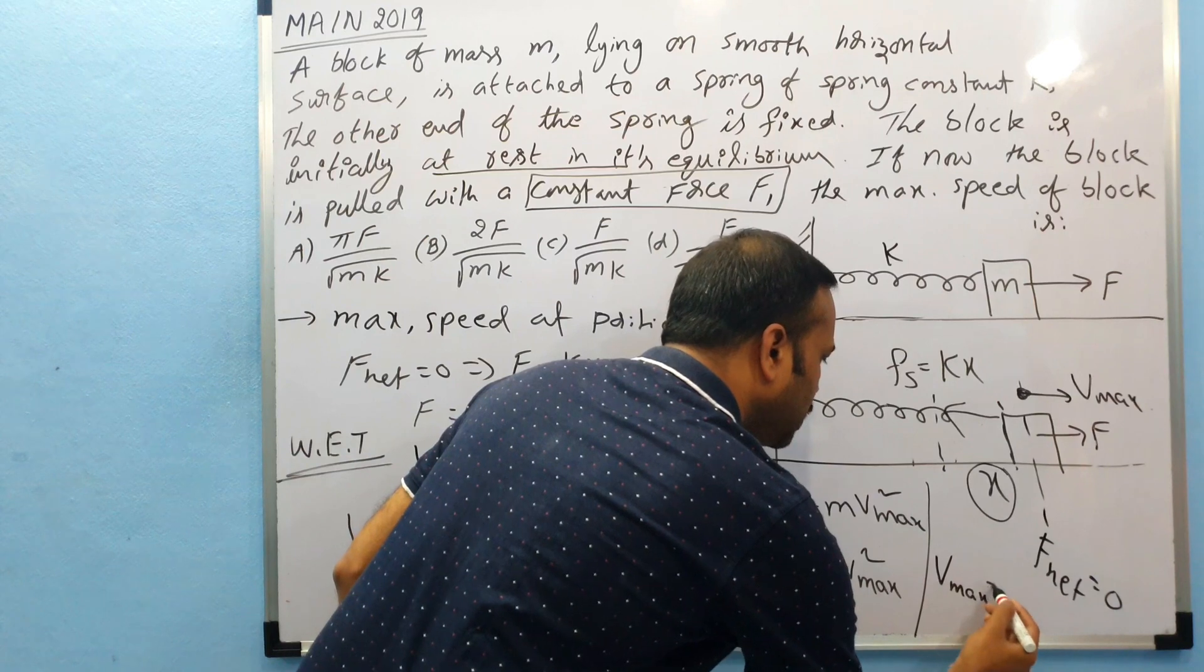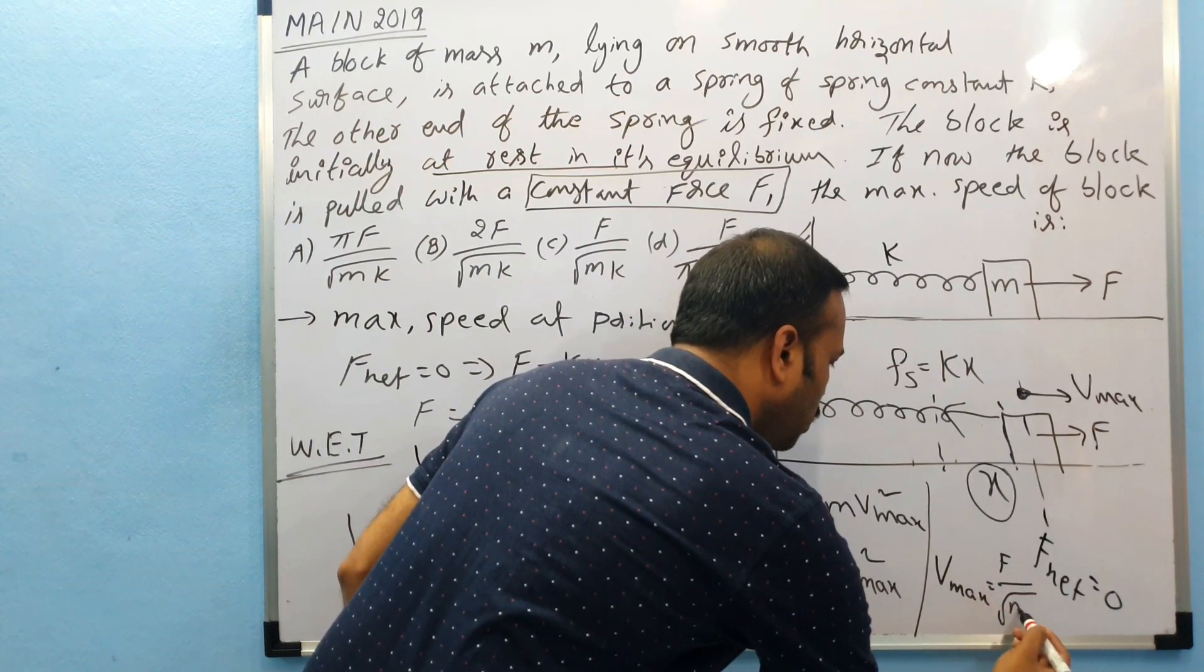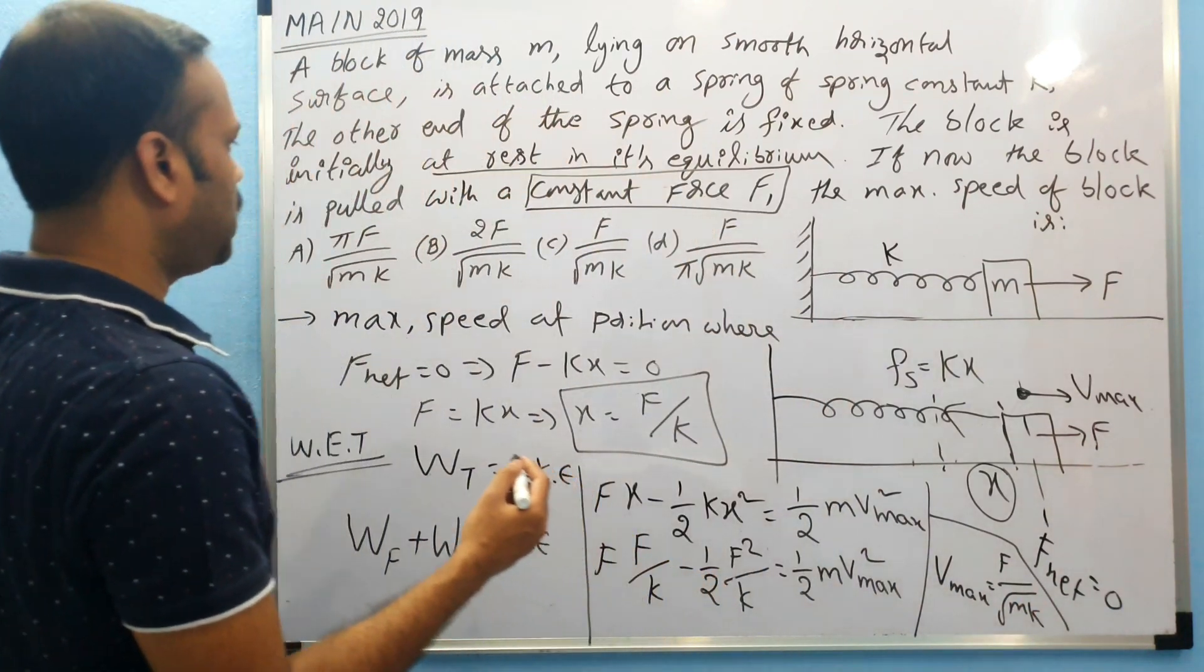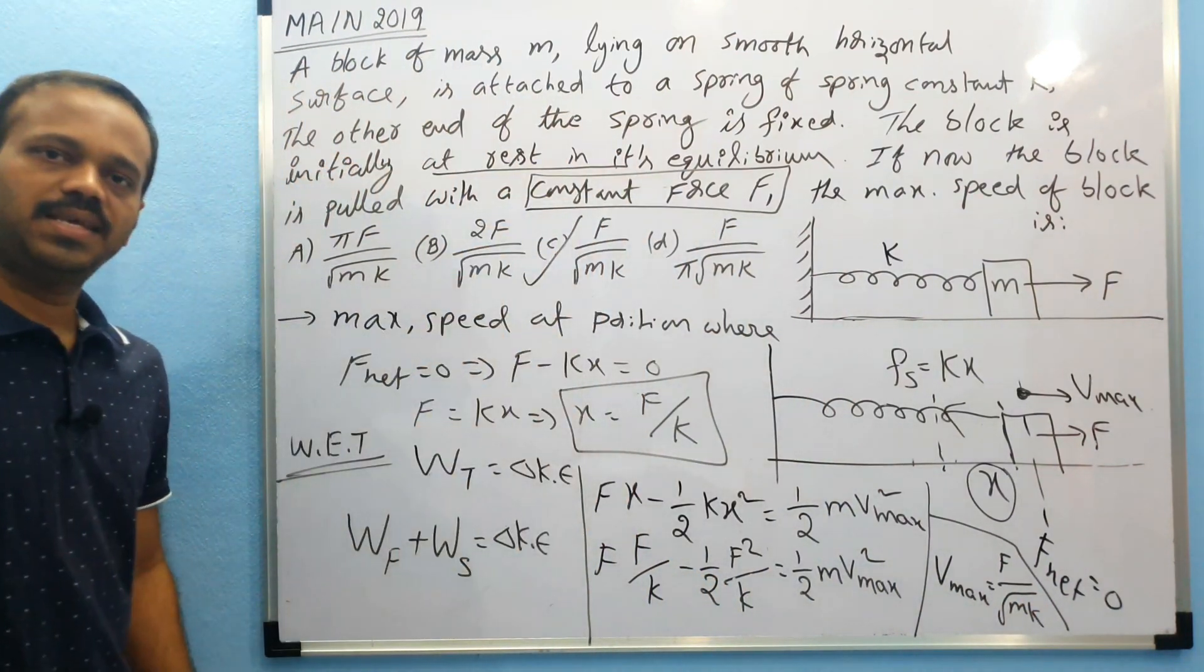Therefore the answer will be v max is equal to F by root mk. So the correct option is C. The answer is C.